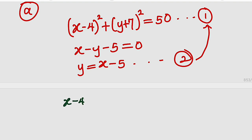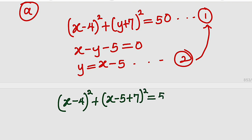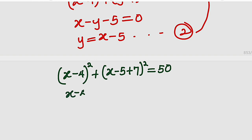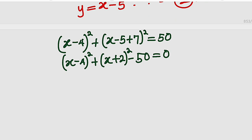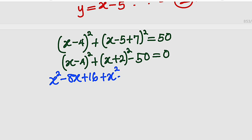Wherever we have y, we substitute it with x minus 5. So this becomes x minus 4 whole squared plus x minus 5 plus 7 whole squared equal to 50. That simplifies to x minus 4 whole squared plus x plus 2 whole squared equal to 0, taking 50 inside as negative 50. Now let us expand: x squared minus 8x plus 16 plus x squared plus 4x plus 4 minus 50 equal to 0.